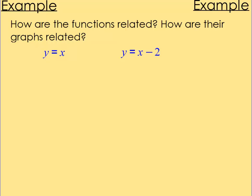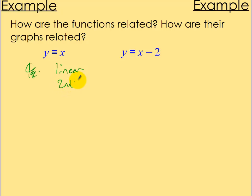Write those down and let's try these examples. How are the functions y equals x and y equals x minus 2 related? Well, they're both linear. The second one is 2 less — you're subtracting 2. So they're both linear functions except we have 2 less: it's x minus 2 instead of x.